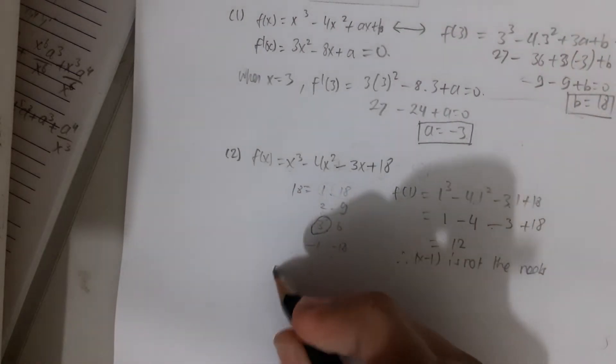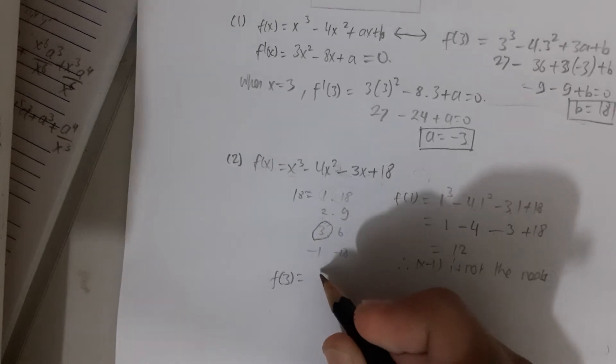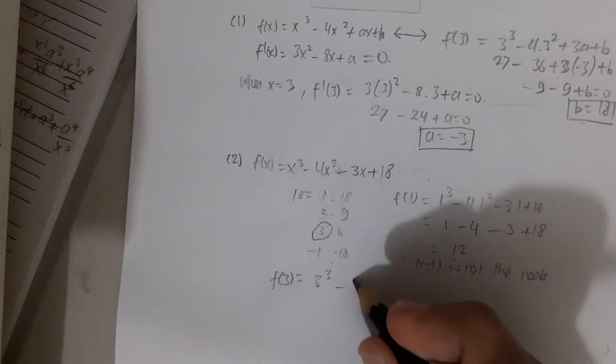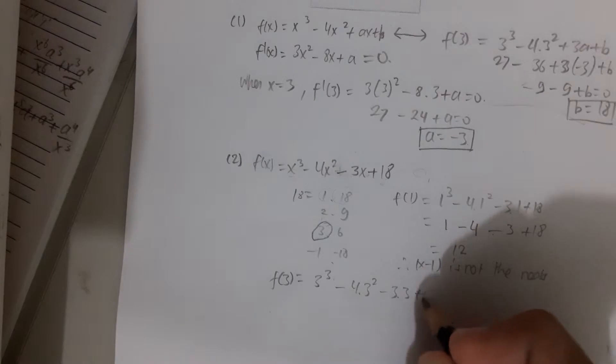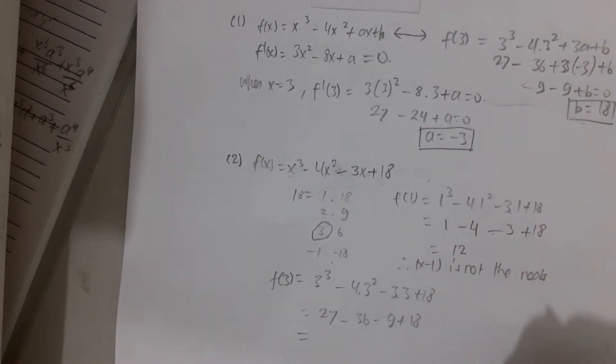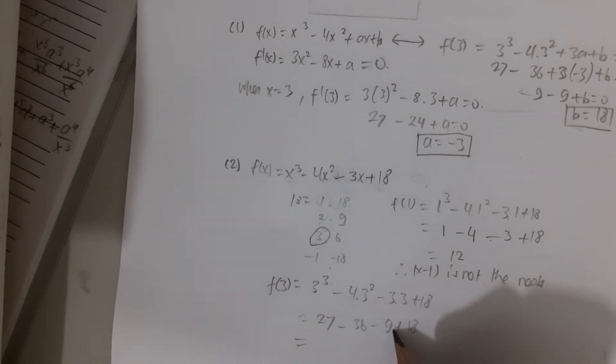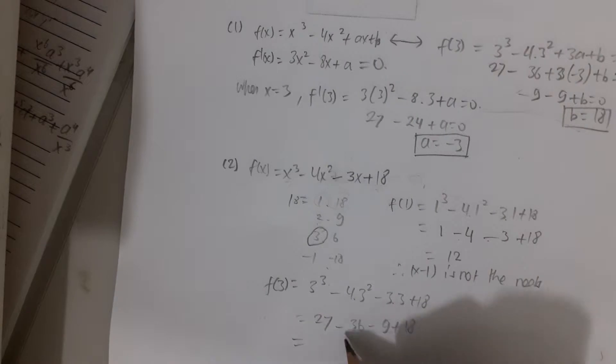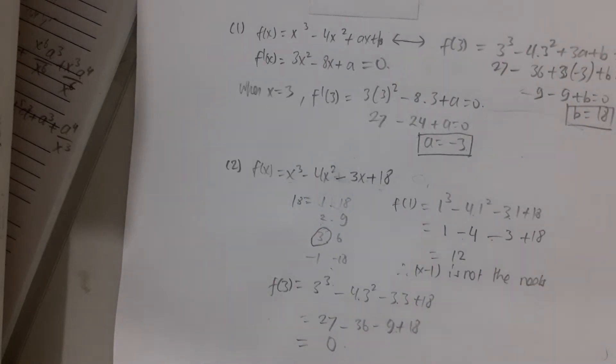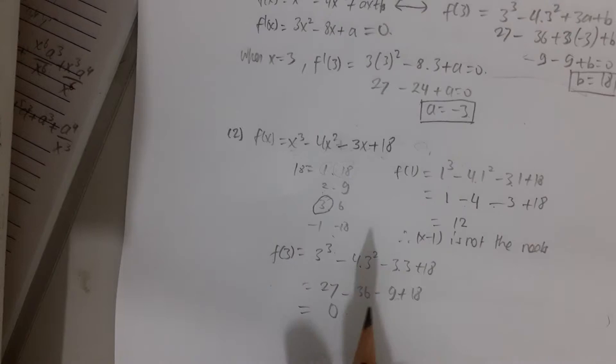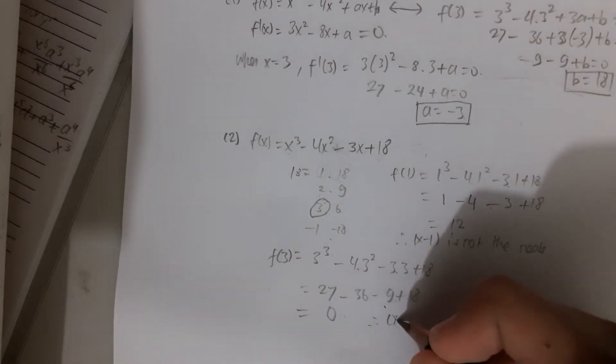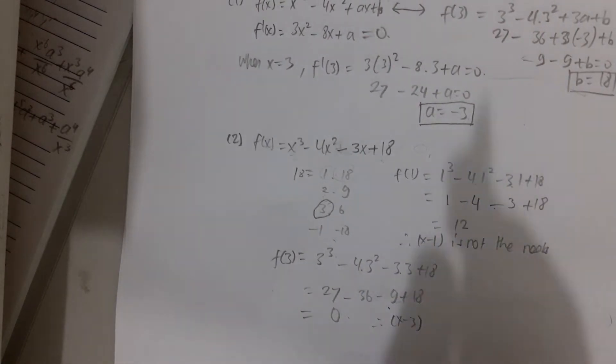So 1³ minus 4 times 1² minus 3 times 1 plus 18. It is 1 minus 4 minus 3 plus 18. This is equal to 1 minus 7 is minus 6 plus 18 is 12. So 12 is not 0. Therefore, x minus 1 is not the roots of the function. Eventually I tried 3. So f(3) is 3³ minus 4 times 3² minus 3 times 3 plus 18. So this will be 27 minus 4 times 9, which is 36, minus 9 plus 18.